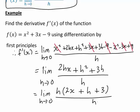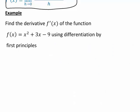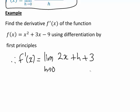That's good because now the h's out the front here on the numerator and this one on the denominator will cancel. So what are we left with now? Well now we're just left with f'(x) equals the limit as h approaches 0 of 2x + h + 3.